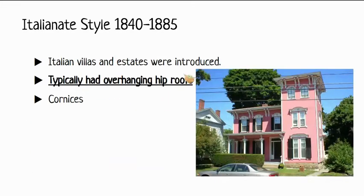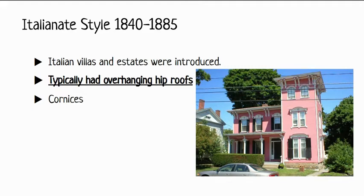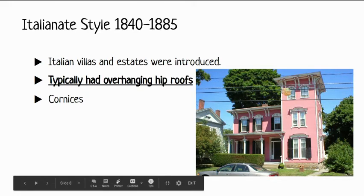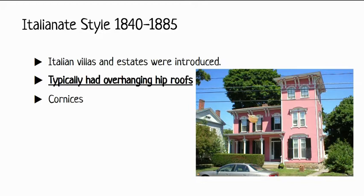The Italian style introduced villas and estates. They typically had overhanging hip roofs, and sometimes dealt with flat roofs instead. They were known for their cornices, which are pretty prominent — you can see them right here. This one has a very low hip roof, kind of a flatter one, not really as much of a pointed one. They were kind of tall, very squared-off or rectangular houses, with cornices all through and around there.